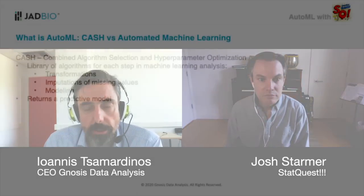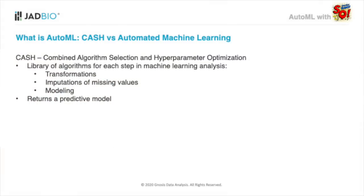For example, our system — JadBio — fully automates predictive modeling with tabular data, but not unsupervised learning. Some people confuse Auto ML with what is called, technically, CASH, standing for Combined Algorithm Selection and Hyperparameter Optimization. CASH algorithms optimize the combination of algorithms to use at each step of the analysis — like transformations, imputation of missing values, feature selection, modeling — and their hyperparameters, but in the end they just return a predictive model. The most famous example is AutoSklearn, but it only returns a predictive model.